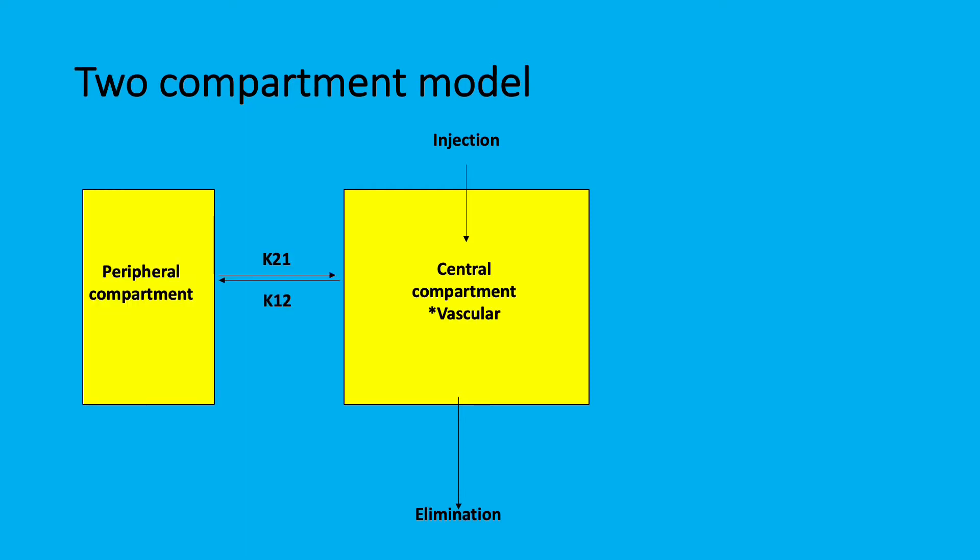Two compartment models are a little bit more complicated. You still have one compartment and then we have an additional compartment. The drug is given in the central compartment, the vasculature. As the drug increases in concentration, this will cause distribution to peripheral compartments at a specific rate, i.e., rate constant. For this we can call it K1-2.